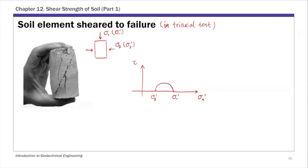As discussed in the previous lecture, each point on Mohr's circle represents a combination of normal and shear stress at a different plane orientation. For this soil element, there is a clearly visible failure plane. The angle of this failure plane from the horizontal direction is called theta. On this plane, we have a normal stress sigma prime and a shear stress tau_f — the shear stress on the failure plane at the state of failure.